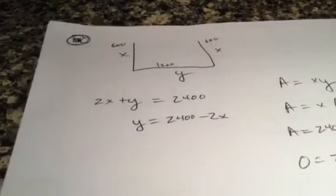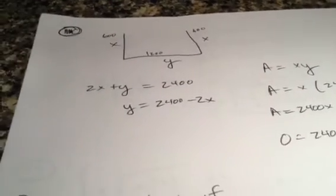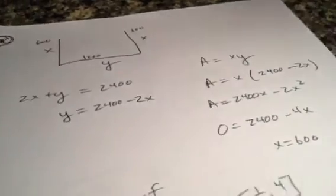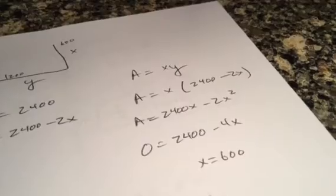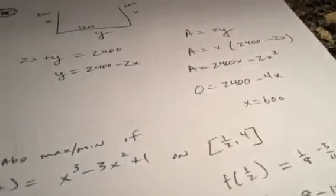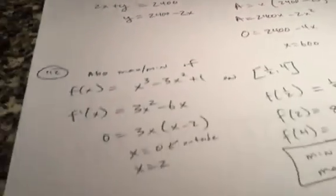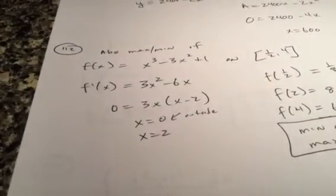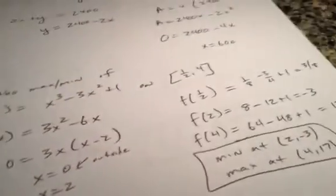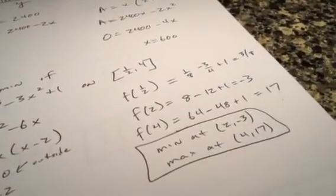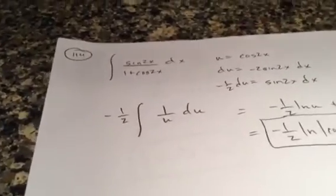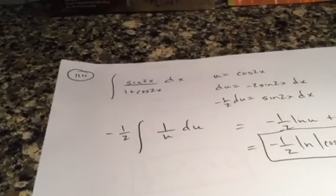For the optimization problem — I believe it's 110 or 111 — you have 2400 feet of perimeter. Solve for y, then maximize the area: take the derivative, set it equal to zero, giving 600 and 600, then 1200. For the absolute min and max on that interval, take the derivative, set it equal to zero; the critical value of zero is outside the interval, so plug in the three remaining values to find the absolute min and max. That's the end of the first video — the second video will have the rest of the answers.